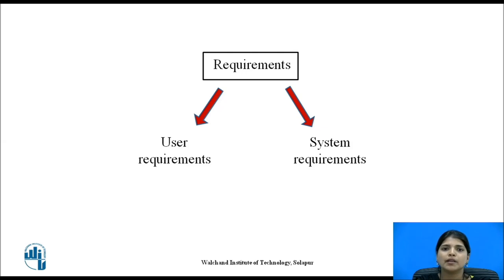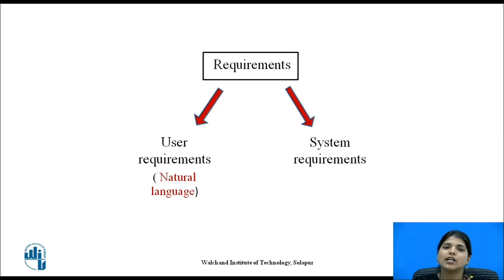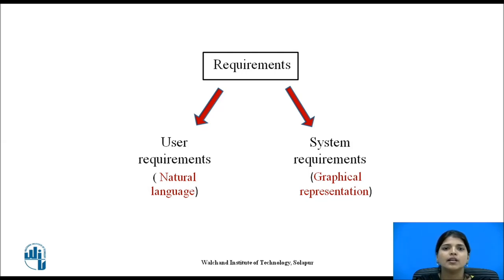Usually we prefer natural language for user requirements, but use of natural language can be confusing and difficult to understand. So for system requirements, we use a graphical system model. Therefore, graphical representation is preferred for system requirements.